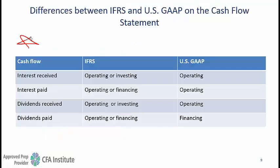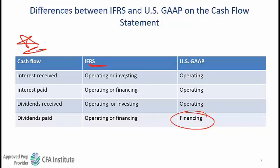This is perhaps the most important slide. In the context of the cash flow statement, US GAAP says that interest received, interest paid, and dividends received must be classified as operating, while dividends paid must be classified as financing. Whereas IFRS gives you flexibility: interest received and dividends received can be shown as operating or investing, and interest paid and dividends paid can be shown as operating or financing.